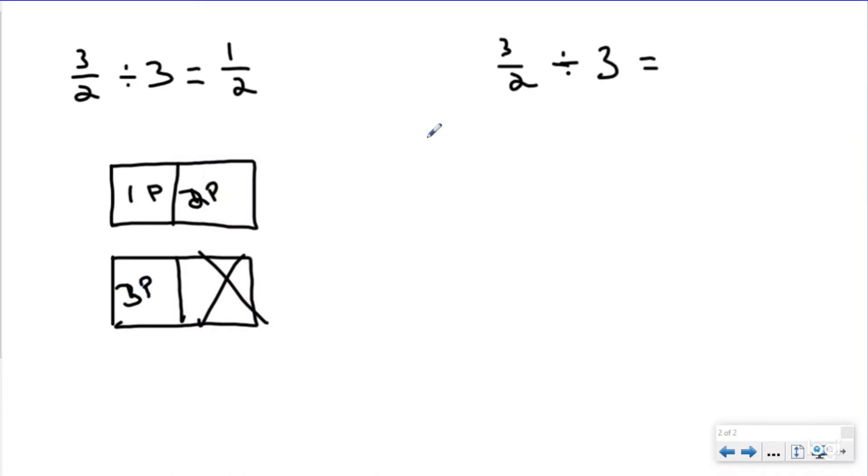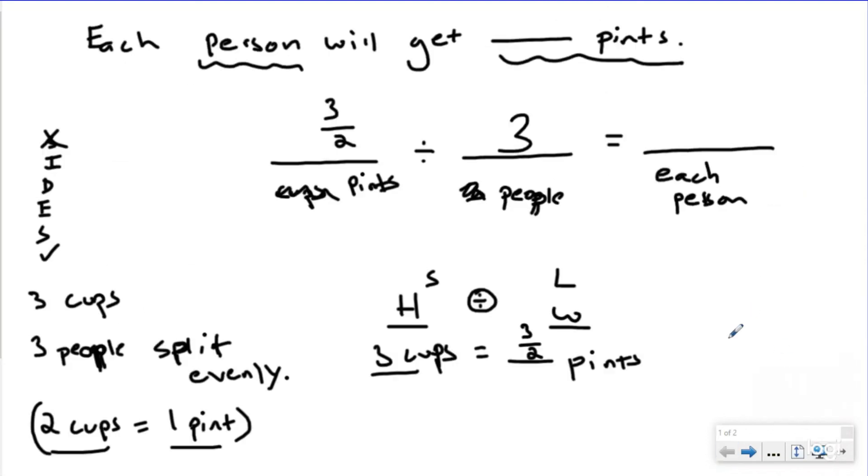If I want to do the shortcut, I can turn everything into a fraction and do keep-change-flip. If you don't know how to do keep-change-flip, I will link the song in the description. We're going to keep the first fraction exactly the same, see the division sign and change its name, flip the last fraction on top of itself (called the reciprocal), and then you just multiply across. Three times one is going to be three, two times three is six, and then you can simplify that—check out our simplifying song if you need help—to one-half. I'm going to get the same answer either way. So if I had three-halves pints and I want to split that between three people, each person is going to get one-half of a pint.